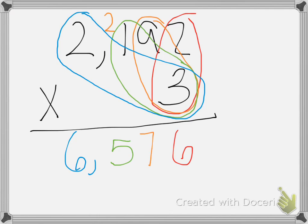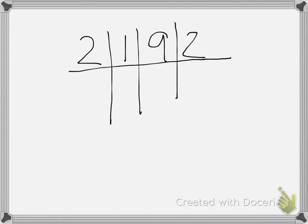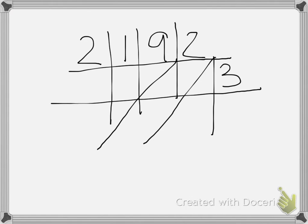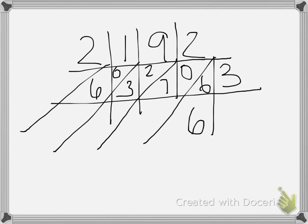Now, it's always a good thing to check your work, either with the lattice method, the partial product, or the area model. So let's do that. If I choose to do the lattice, it's going to look something like this: 2,192 times 3. 3 times 2 is 6, 3 times 9 is 27, 3 times 1 is 3, 3 times 2 is 6. And we go through: 6, 7, 5, 6. Was that the same answer we got? You bet.